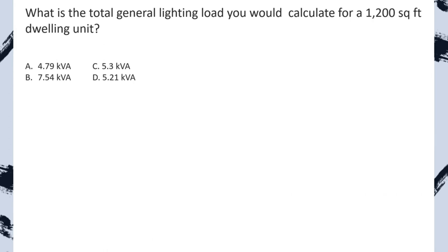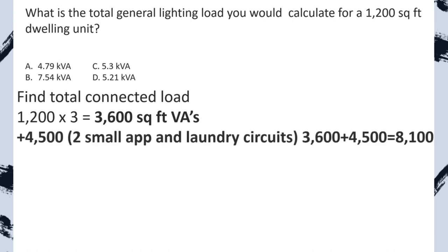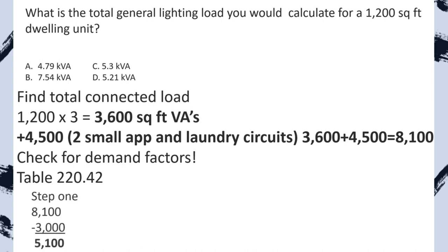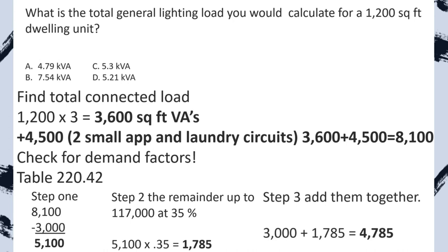Practice problem: What is the total general lighting load for a 1,200 square foot dwelling unit? Any time it asks for the total, always apply the demand factor if one exists, and always include two small appliance and one laundry circuits. Step one: 1,200 sq ft multiplied by 3 VAs equals 3,600 VAs. Add 4,500 for small appliance and laundry: total is 8,100 VAs. Check demand factors per Table 220.42: subtract 3,000 at 100%; multiply remaining 5,100 by 0.35; add them back together for a new reduced load of 4,785 VAs. We select A.